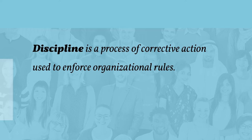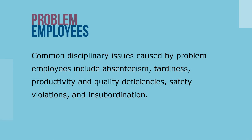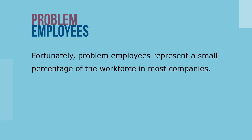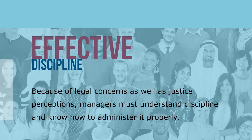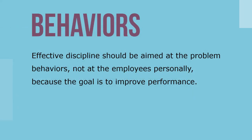Discipline is a process of corrective action used to enforce organizational rules. Common disciplinary issues caused by problem employees include absenteeism, tardiness, productivity and quality deficiencies, safety violations, and insubordination. Although problem employees represent a small percentage of the workforce, if managers fail to deal with them promptly, work outcomes are negatively affected and work unit relationships can become strained. Identifying violations and taking steps to correct them is the responsibility primarily borne by line managers, but HR staff assist in dealing with disciplinary action. Because of legal concerns and justice perceptions, managers must understand discipline and know how to administer it properly. Effective discipline should be aimed at the problem behavior, not at the employees personally, because the goal is to improve performance.